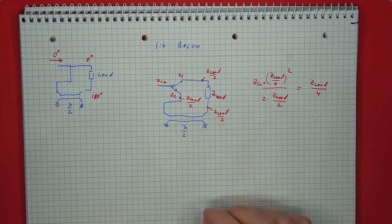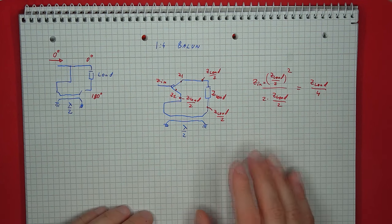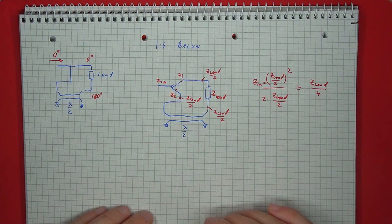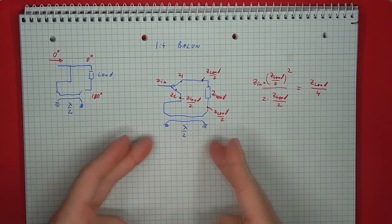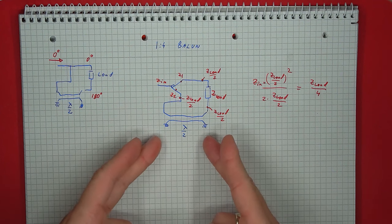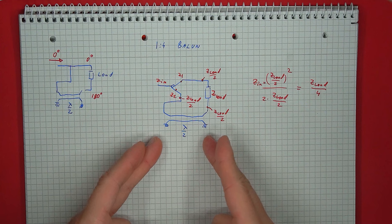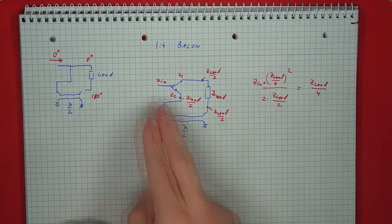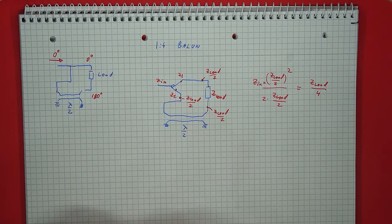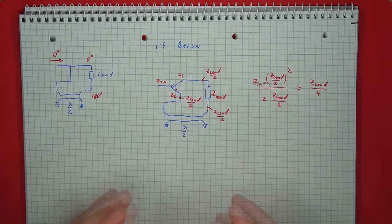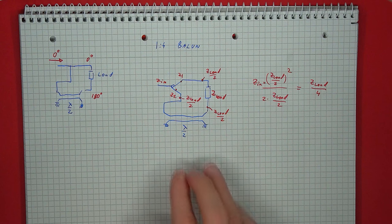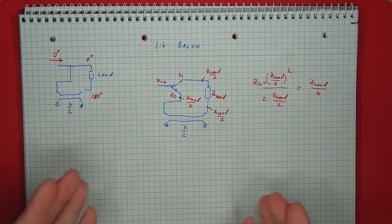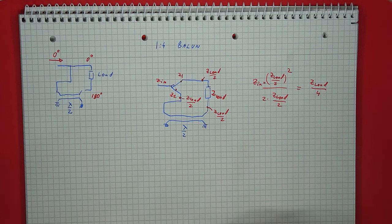An important observation about this structure is that the exact impedance of the half wavelength transmission line does not matter. Commonly it is built from the same line through which the incoming signal is fed, but based on this operating principle, that is not mandatory — you can make this section with any characteristic impedance.